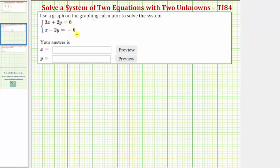In order to solve this system by graphing using the TI-84 graphing calculator, we first need to solve both equations for y. So we need to solve 3x + 2y = 6 for y, and we need to solve x - 2y = -6 for y.